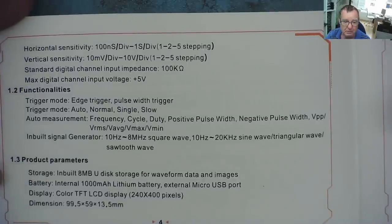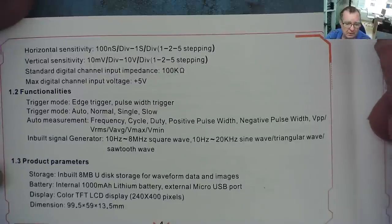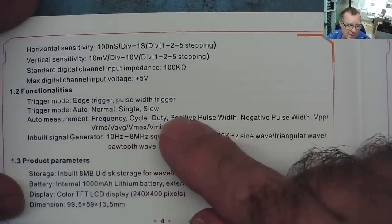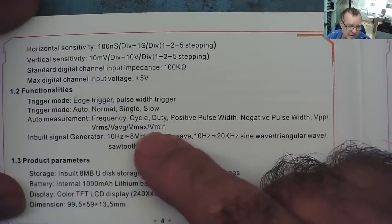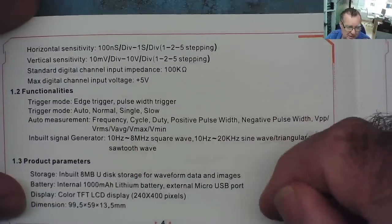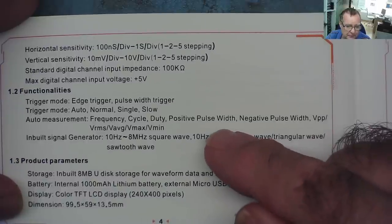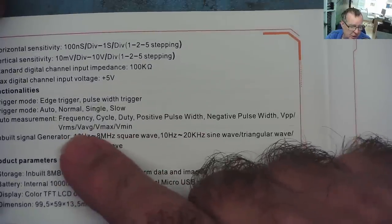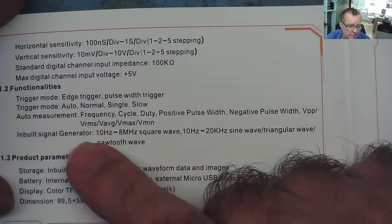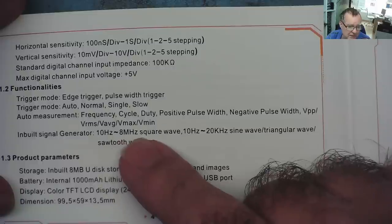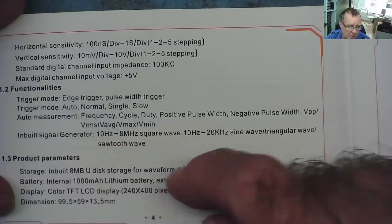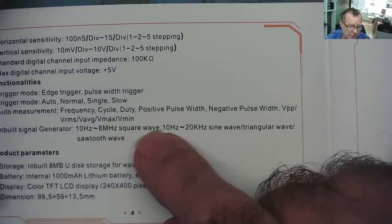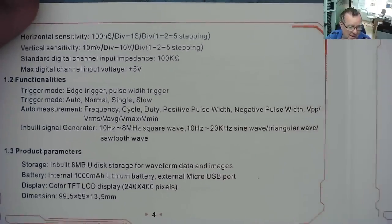One thing I know this oscilloscope does not support is XY mode. So you can't look at Lissajous figures and that sort of thing on it. It does have that missing, which is a bit of a shame, because that can actually be quite useful in certain cases. But I guess you can't have everything in these things. And I think it's fairly common with digital oscilloscopes that they don't implement the XY facility properly. We get measurements for frequency, cycle, duty cycle, pulse width, voltage peak to peak, RMS, average, max, minimum. Inbuilt signal generator. 10 hertz to 8 megahertz square wave. And 10 hertz to 20 kilohertz sine wave, triangular wave, and sawtooth.